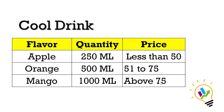For discussing conjoint analysis I am taking a very simple example of a cool drink. Here we have three attributes: flavor, quantity, and price. For flavor I have taken three elements — apple, orange, and mango. For quantity there are three levels: 250 ml, 500 ml, and 1000 ml. For price: less than 50 rupees, 51 to 75 rupees, and above 75 rupees.